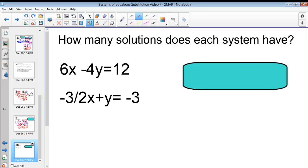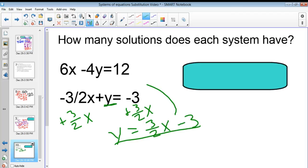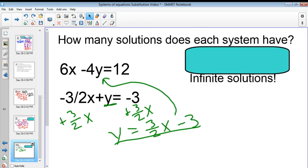Again, pause. Try it out. Come back to me. Okay, you're back. So, here I'm going to solve for y again. Very easy for me to solve for y here. I'm going to add 3 halves x to both sides, giving me y equals 3 halves x minus 3. And then, I'm going to plug this in for y. I just realized I didn't reveal that. It's infinite solutions.